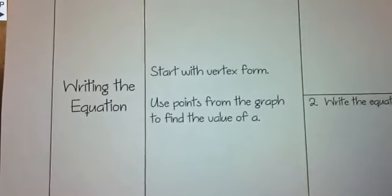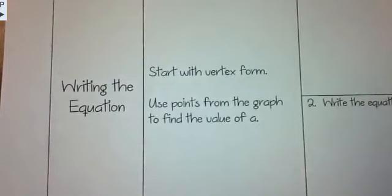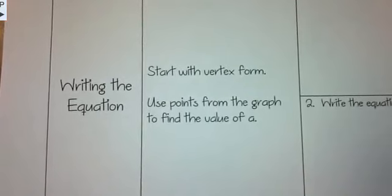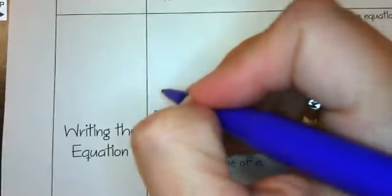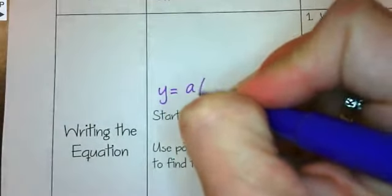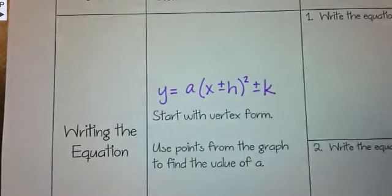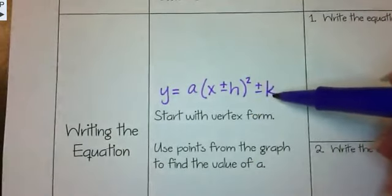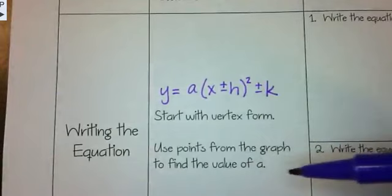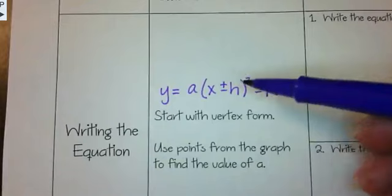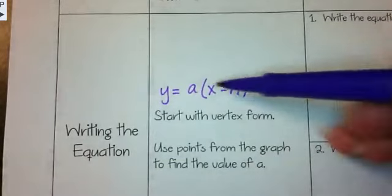Writing the equation — start with vertex form, that's probably the easiest. Then use points from the graph to find the value of a. Watch closely, because this is what many of you were kind of wimping out on when we were doing our Angry Birds activity. Remember that vertex form looks like a times (x plus or minus h) squared plus or minus k. All we have to do is fill in h and k, then use a point from the graph to fill in for x and y, and we can solve for a.